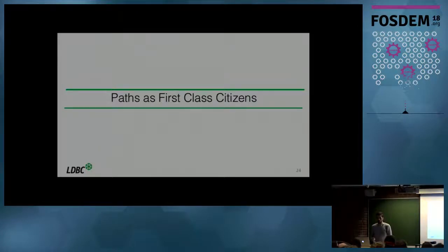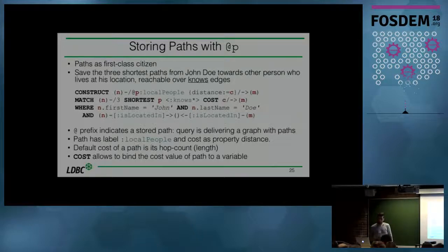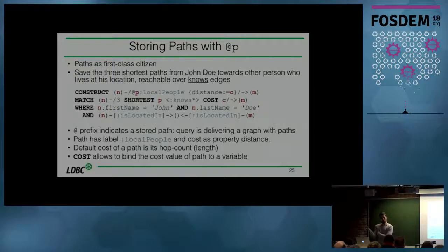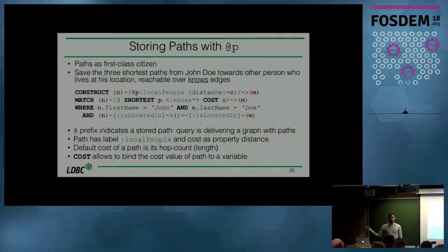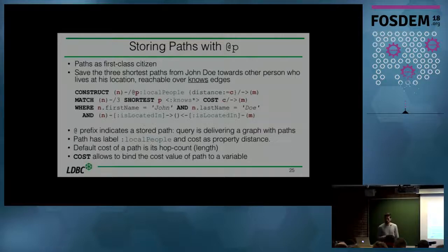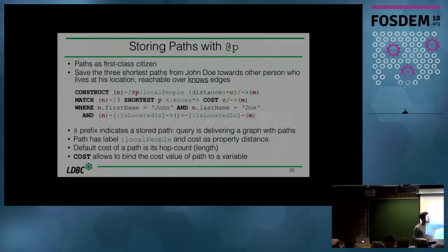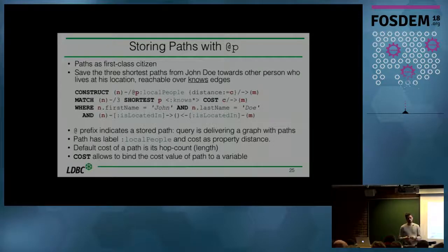Let's come to paths as first-class citizens. The idea is that paths can also be objectified — by creating a kind of object which represents the path you have queried. When you turn a path into an object, you are also able to attach labels and properties to it, just like nodes and edges. You do this with a MATCH query with a regular expression, and if you assign the path pattern a variable P, then the variable is bound to a path. When you construct a new graph, you can include this path.